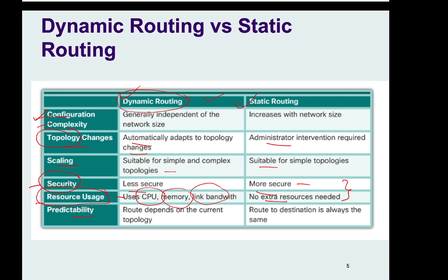Predictability: this means, for a packet going to a particular network, can I predict which path it will take? In dynamic routing, the path can change depending on conditions, so it is not always predictable. But for static routing, the path is the one we manually configured — the router will not send packets via any other path. So it is essentially fixed; you can predict that a packet going to that network will go via this specific interface.